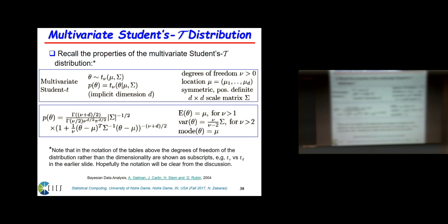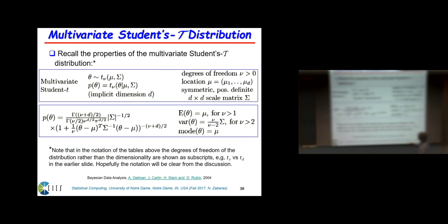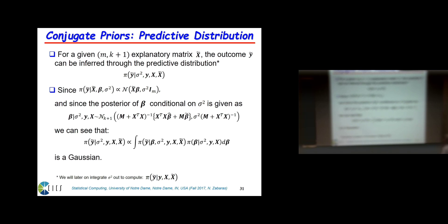Regarding notation in the Bayesian Core book: for the Student t distribution, sometimes the degrees of freedom appear as a subscript and the dimensionality is inside, and sometimes it's reversed. Since beta has dimensionality k+1 there should be no confusion. Note: we're not done yet — we still need to compute the predictive distribution.